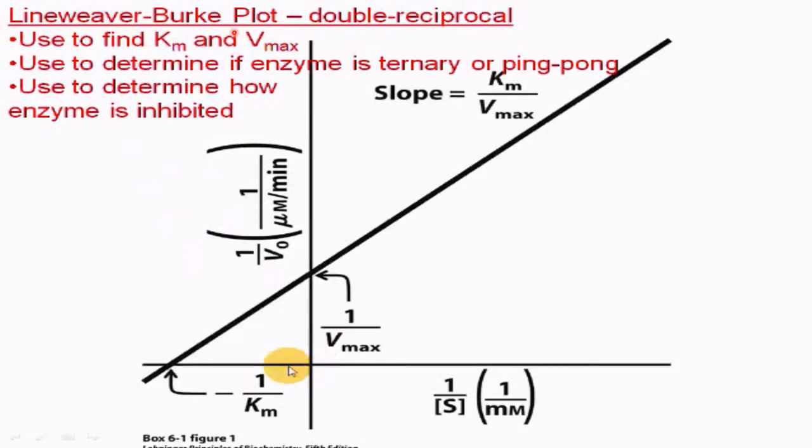Lineweaver-Burk plot: It is also called a double reciprocal plot, because it is just like Michaelis-Menten plot but in a reciprocal manner. It is used to find out KM and Vmax. It is used to determine enzyme in ternary or ping-pong form, and it is used to determine how enzyme is inhibited.